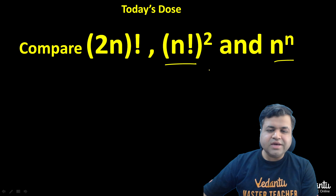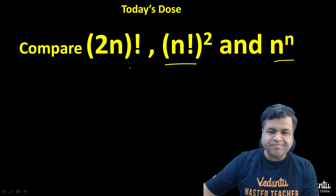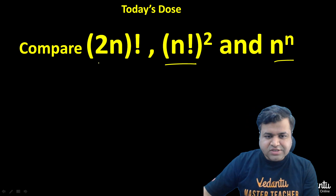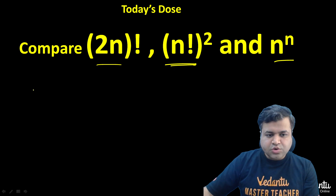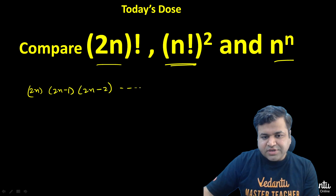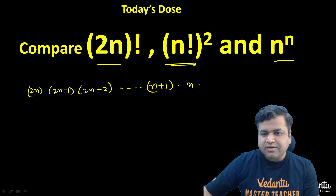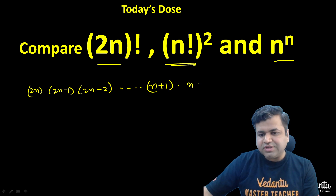Let's see which one is the greatest and which one is the smallest. First of all, let's compare (2n)! and (n!)². (2n)! is nothing but 2n times (2n−1) times (2n−2) times and so on till (n+1), into n! basically.